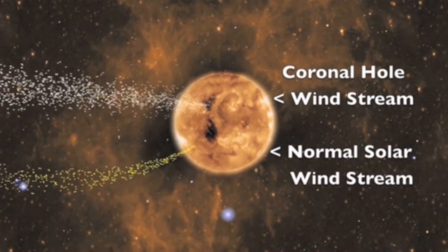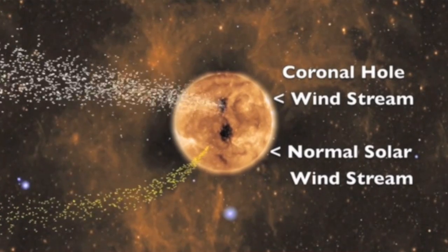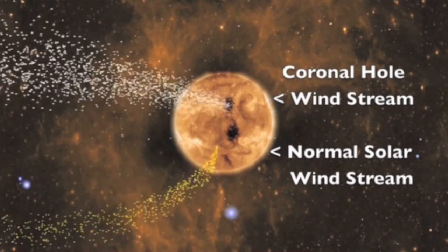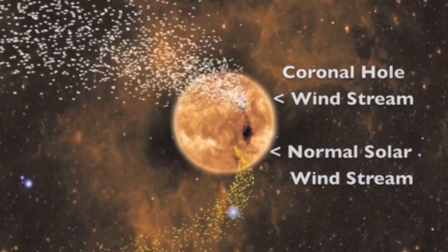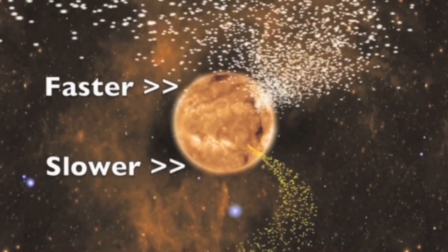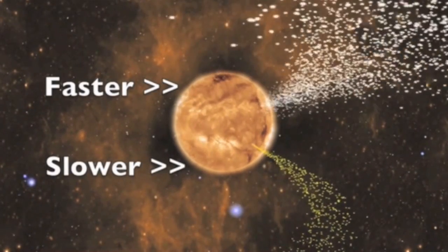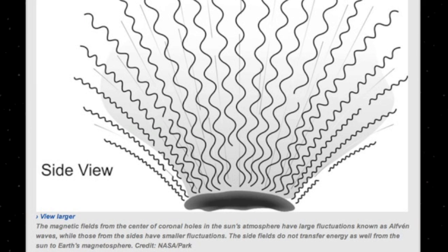This allows the solar wind to push out much more quickly. The solar wind streams from coronal holes can be twice as fast as normal solar wind or more — as fast as many large CMEs.